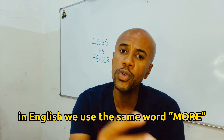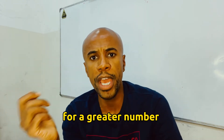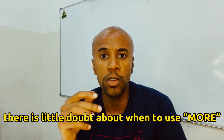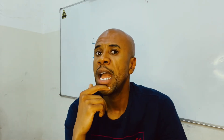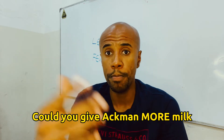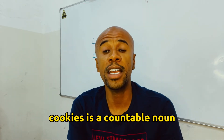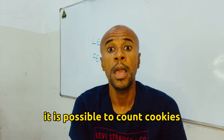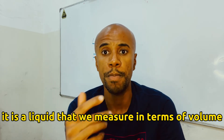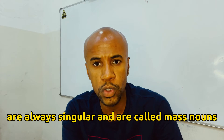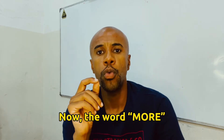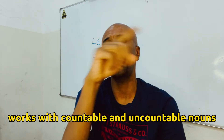In English, we use the same word more for a greater number or a greater amount or quantity. There is little doubt about when to use more. For example, Ahmed has demanded more cookies. Could you give Ahmed more milk? Cookies is a countable noun — it is possible to count cookies. Milk, on the other hand, is an uncountable noun. It is a liquid that we measure in terms of volume. Uncountable nouns are always singular and are called mass nouns. The word more works with both countable and uncountable nouns.